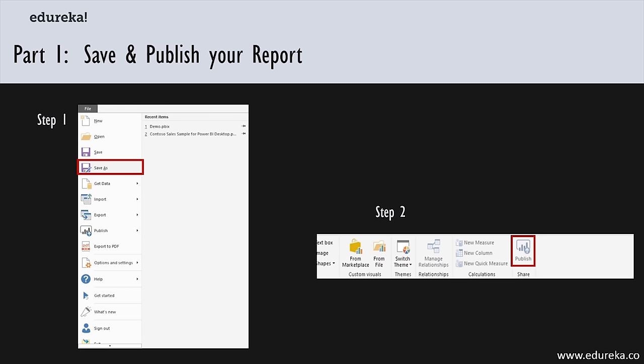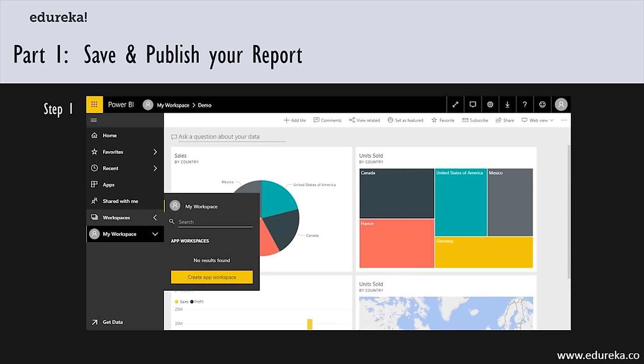If you want to share your results with someone, the best way is to publish to Power BI Service. Use the Publish button on the Home tab — it's on the furthest right. When publishing is complete, you'll be given a link to click to go see your report on the Power BI website. This is the Power BI.com interface, which gets updated from time to time.